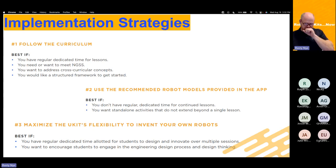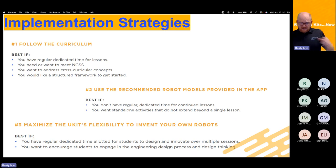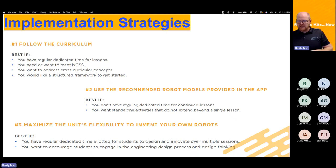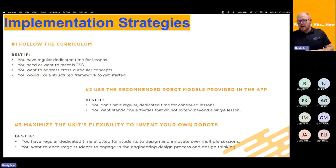A third strategy is to utilize the open-ended nature of robotic kits — take a step back from structured instructions and have students invent their own robot. This is great for STEM or maker programs that have regular dedicated time with students over multiple sessions. If you have six sessions with the same students and you want them to engage in creative design processes and think outside the box, this is a great approach that doesn't confine their creativity to one specific area.